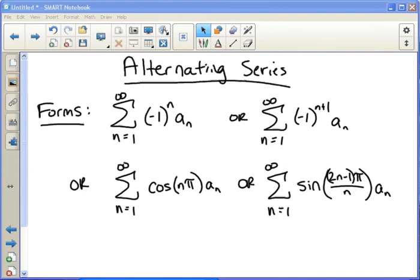But cosine of n pi does the exact same thing as negative one to the n, where it rotates between negative one and positive one. And same with the sine function you see over there on the bottom right. So just be aware that cosine and sine sometimes act as alternating series. But in general you'll look for things like the top two: negative one to the n or negative one to the n plus one.